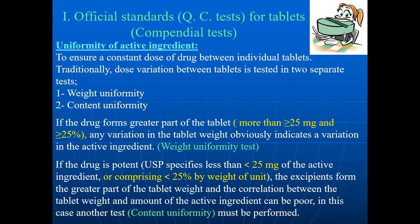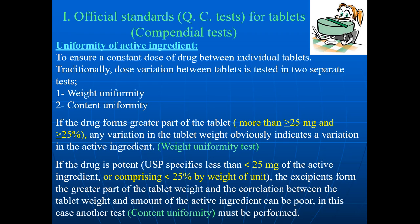Weight uniformity is also called weight variation. For example, if the drug forms the greater part of the tablet — that is, more than 25 milligrams and greater than or equal to 25 percent — then any variation in the tablet weight directly indicates a variation in the actual active ingredients. This is the basis of weight uniformity testing.